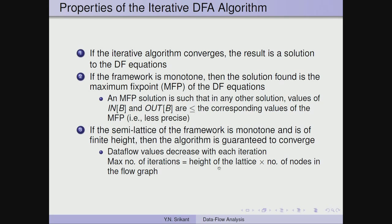The height of the lattice is the number of distinct values possible, one for each level. We start with the top and can go down to the bottom; we cannot go below that, and the values decrease with each iteration. At some point they do not decrease any further — the lowest value obtainable is the bottom of the lattice. So from top to bottom is the height, and every iteration looks at all nodes in the flow graph; this is the maximum number of iterations possible.